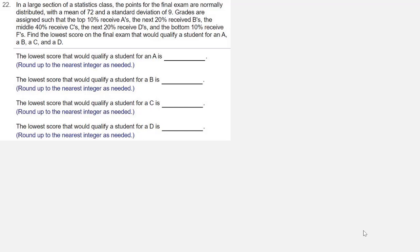Find the lowest score on the final exam that would qualify a student for an A, a B, a C, and a D. So let's try to graph this situation because this is kind of complicated and a picture might help reveal what we need to do.